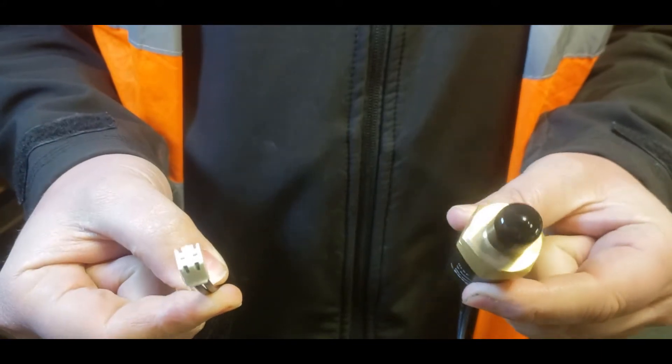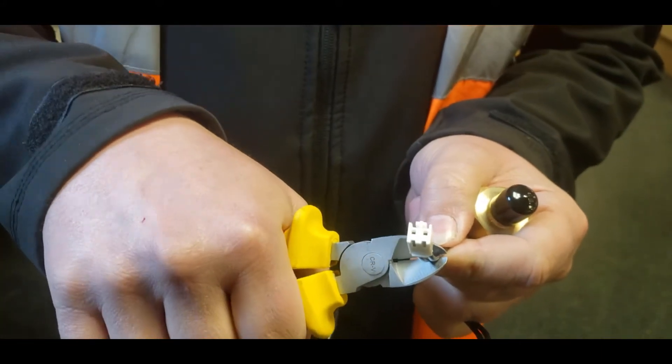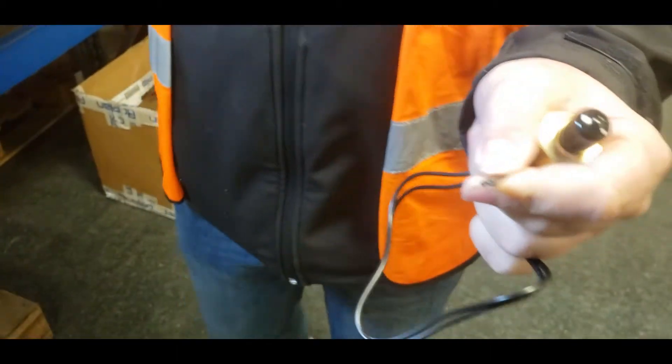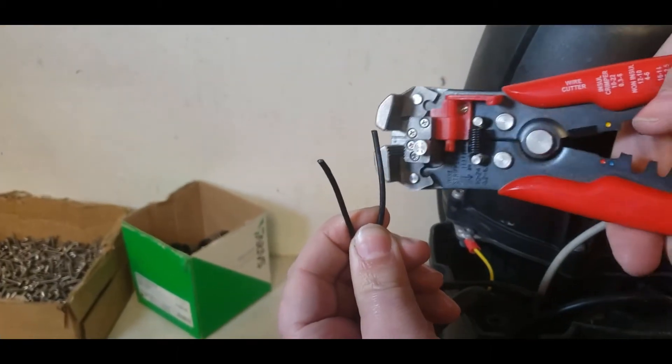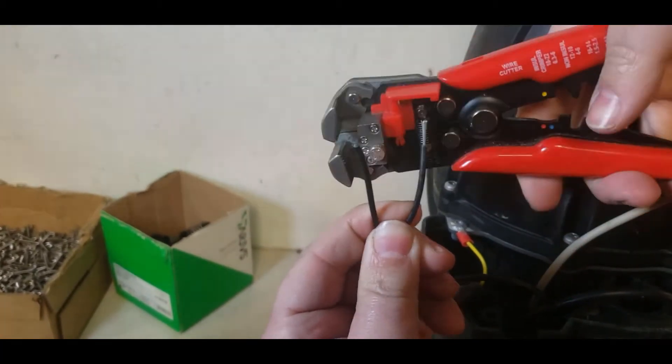Your new pressure switch comes with a connector, however this is not needed and can be cut off. Strip the ends of the wires on both the new pressure switch and also the old cables still on the pump.